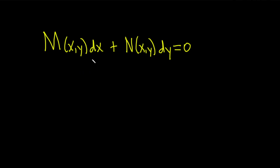So this is a differential equation: we have some function M of x and y times dx, plus some function N of x and y times dy, equal to zero. Before we can define what it means for this equation to be homogeneous, we have to define what it means for a function to be homogeneous.